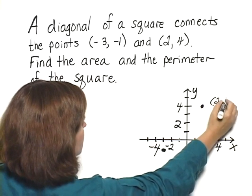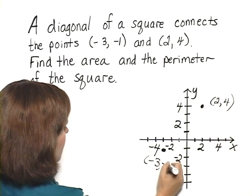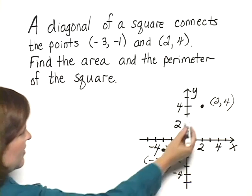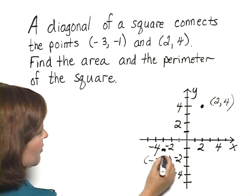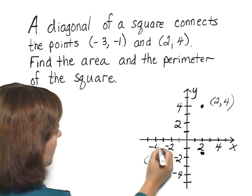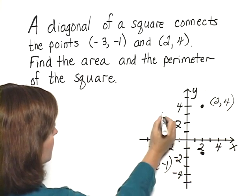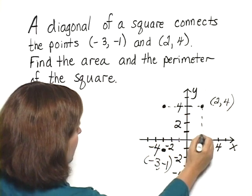Let's label those points: 2, 4, and negative 3, negative 1. That's the diagonal of the square. So we can finish off the square by going over, making a square here, putting a point here, and going up the same distance and making a point here. And we can see that we have the square.